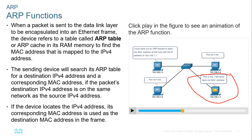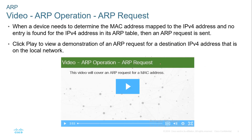The ARP broadcast goes to everyone, and only the device with the matching IP address responds by sending its MAC address back to the original source. This helps build the ARP table, sometimes referred to as the ARP cache. The switch starts building a mapping between Layer 3 and Layer 2 addresses, and also builds a mapping of which MAC addresses are attached to which physical ports. When a device needs a MAC address and no entry is found in its ARP table, an ARP request is sent out as a broadcast.